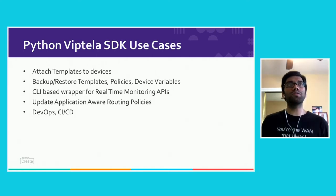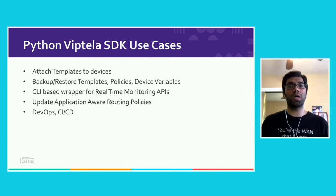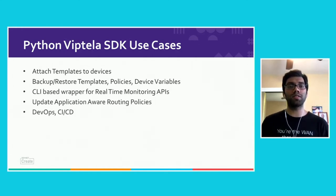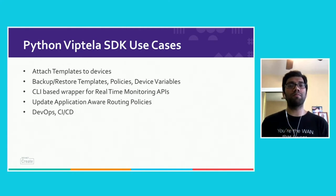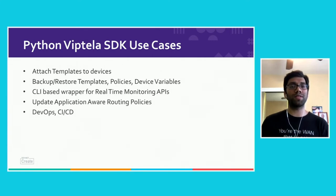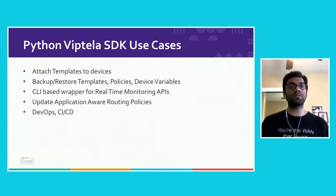A final, really powerful use case is updating application-aware routing policies using the SDK functions. A developer can define how an application routing policy should look for a specific application, then run the SDK commands to trigger that policy change to the existing vManage.